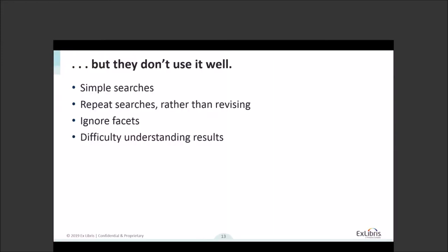But the challenge is that they just don't seem to use discovery very well. Their novice search habits from using Google really follow them to discovery. We know that they start with broad, simple searches, and if the first page of results is not what they want, they start over with new terms. Rather than refining what they're looking for, they just repeat searches, maybe changing the topic a bit and hoping for something different. We know that they have difficulty sorting through results and understanding individual records, and they don't use facets to refine their results. A key role librarians can play is to help them use discovery effectively.